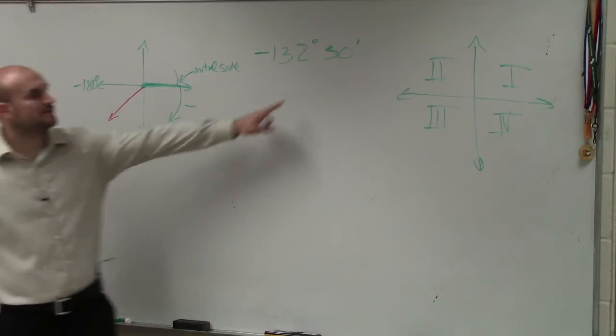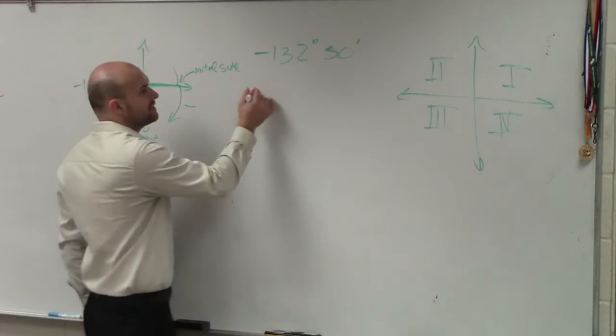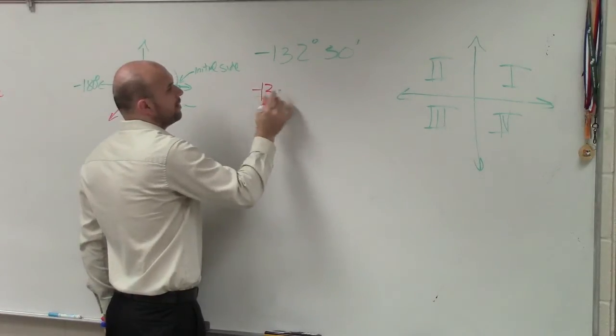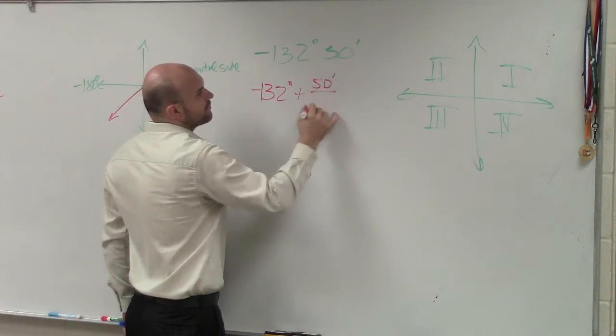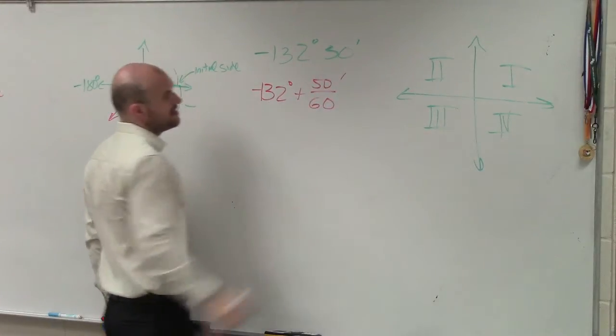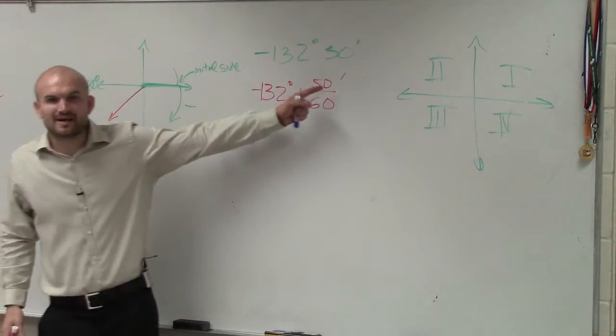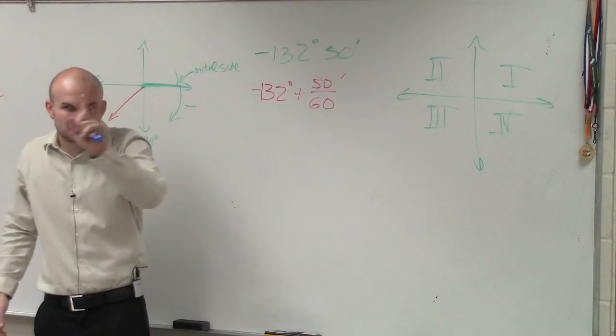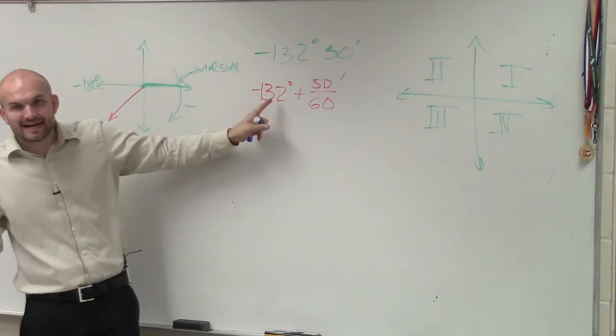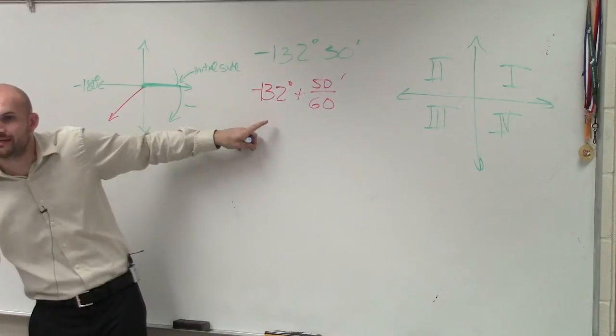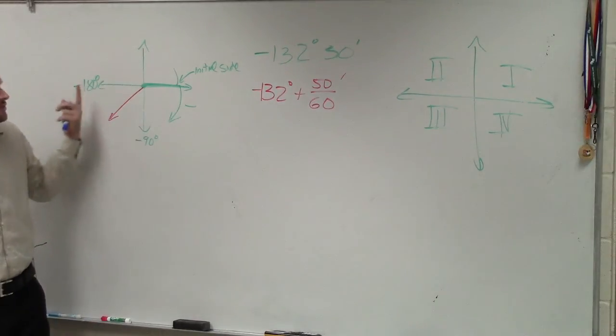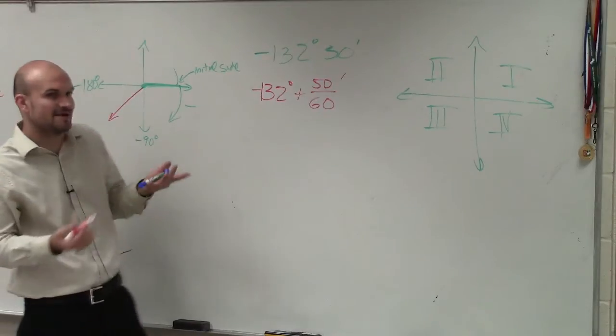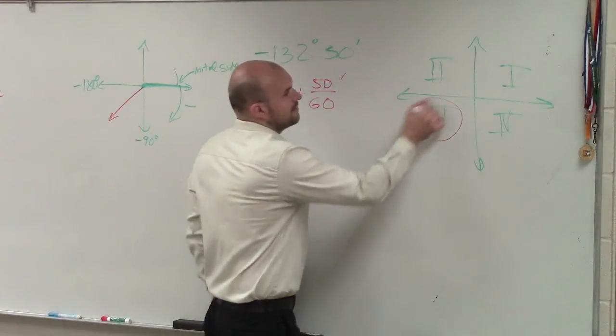Now, what do we do about this 50 minutes? Remember, we can rewrite this as 132 plus 50 minutes over, or 50 over 60 minutes. Well, if you have 60 over 60 minutes, that's just one more degree. So if I even made this to 133, is it really going to get me out of the third quadrant? No. So the minutes is not really going to adjust it, the final answer is the third quadrant.